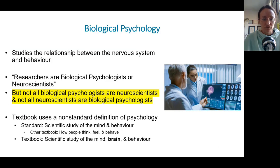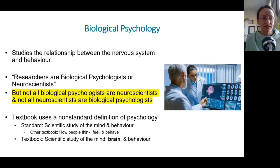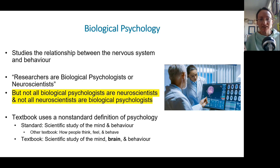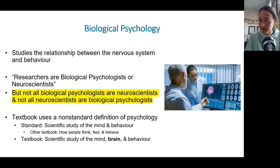Biological psychology is a sub-discipline of psychology that studies the relationship between the nervous system and behavior — though they also include the endocrine system in there as well. That's something I noticed and thought I'd look into.